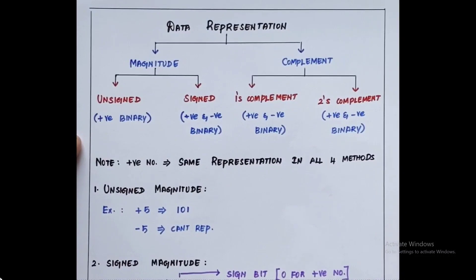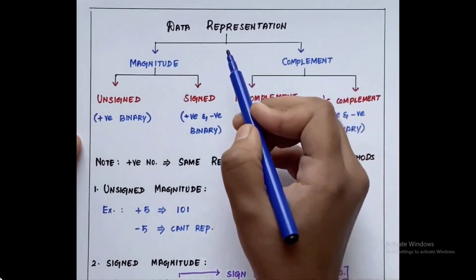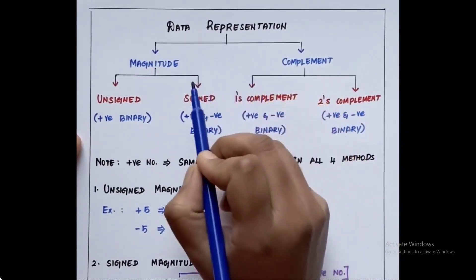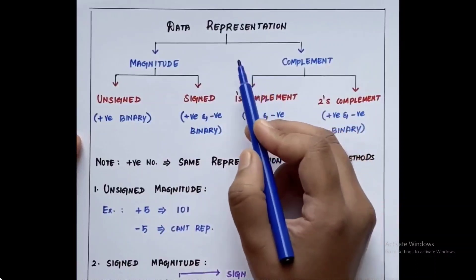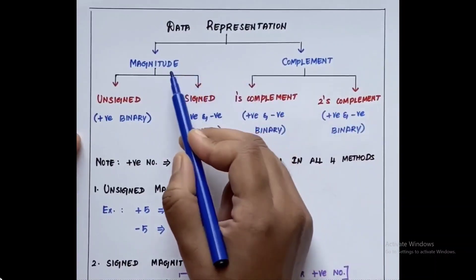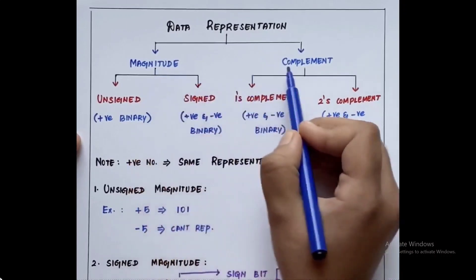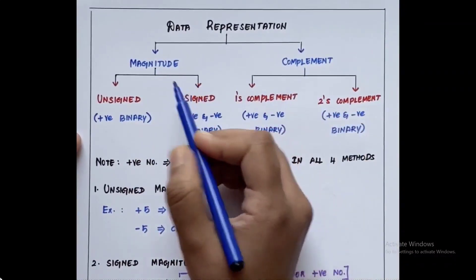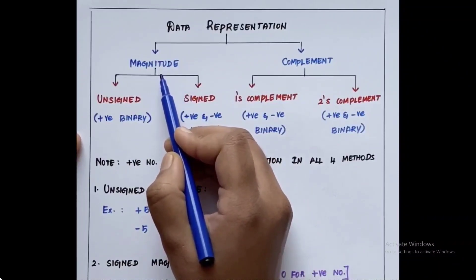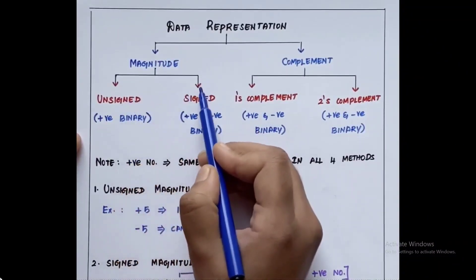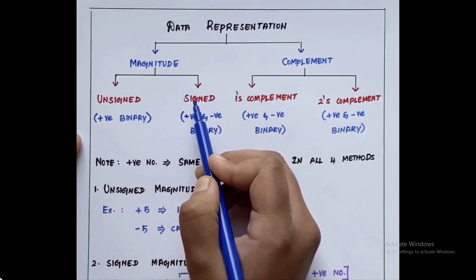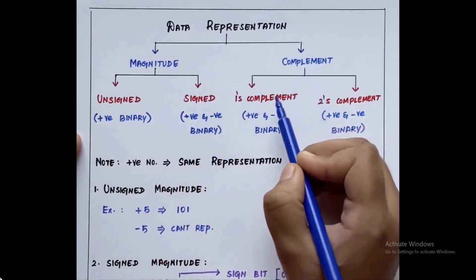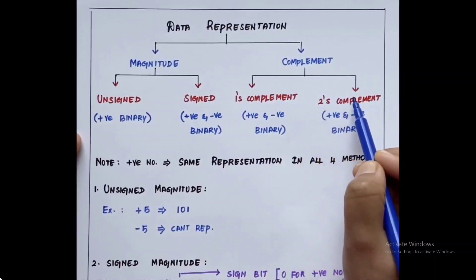Hello friends, welcome to Learners Forum. Let us see about data representation. In general, data can be represented in many ways. The representation is of two types: magnitude and complement. Under magnitude, we have unsigned magnitude representation and signed magnitude representation. Under complement, we have one's complement and two's complement representation.